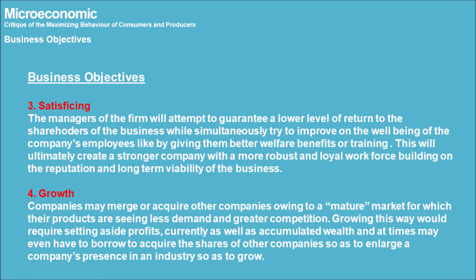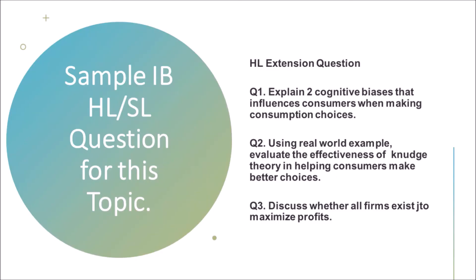Alternative Objective 4: Growth. Companies may merge with or acquire other companies owing to a mature market where their products face less demand and greater competition. Growing this way requires setting aside current profits as well as accumulated wealth, and at times may even require borrowing to acquire the shares of other companies so as to enlarge the company's presence in an industry.